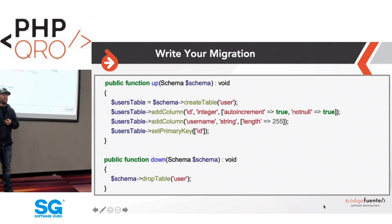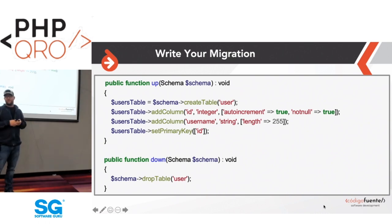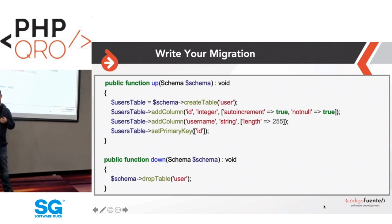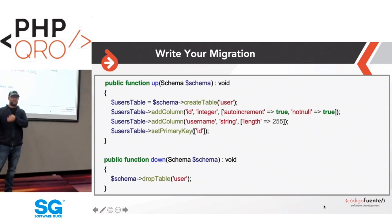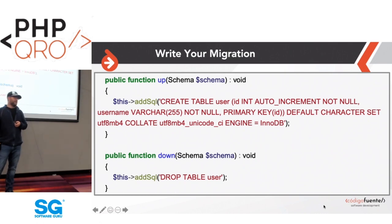If you don't want to write raw SQL, you can use the schema object, which is passed to the up and down methods. The schema object is a fluent object-oriented interface that represents the current state of your database schema. If the database is blank with no tables, when you write code here Doctrine compares the current state to what it sees and issues a CREATE TABLE statement. This is what it would look like if you manually wrote that SQL query.